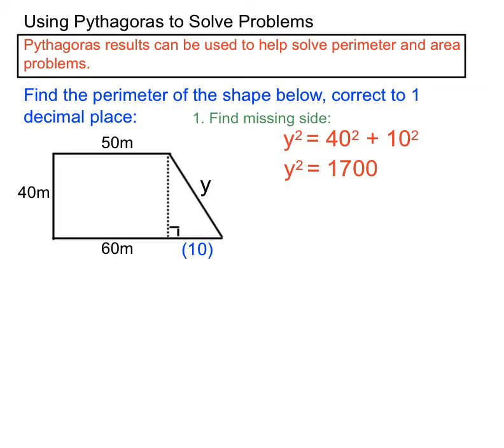So let's process that. 40 squared is 1600. 10 squared is 100. So we actually get on our calculator if we typed it in, 1700 there. We have to square root it to get y on its own. So that ends up being 41.2 if we round it off to one decimal place.